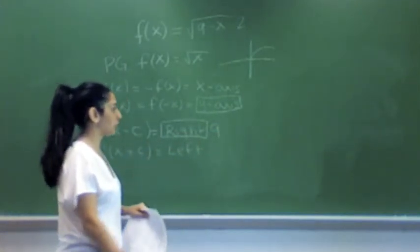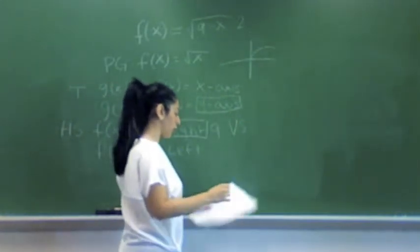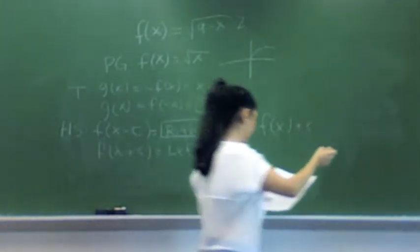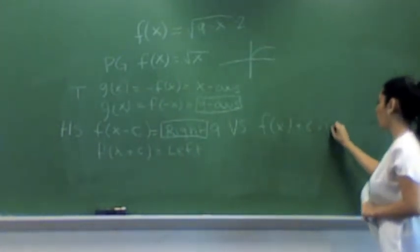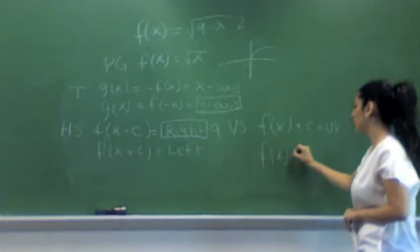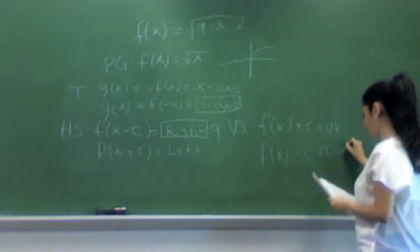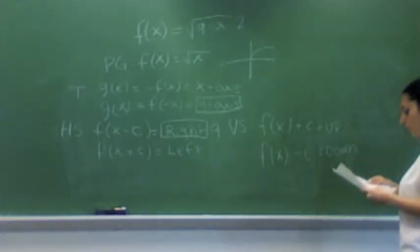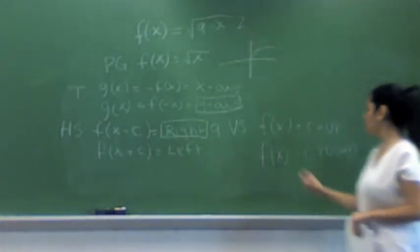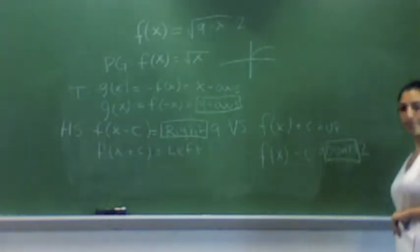Next, for the vertical shift. When f of x is plus a number, you'll be going up. And when f of x is minus a number, you go down. So for this one, it's minus 2. So we will be going down 2.